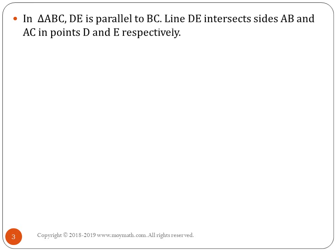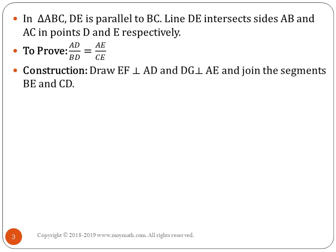In triangle ABC, DE is parallel to BC. Line DE intersects AB and AC at points D and E respectively. We have to prove that AD/BD = AE/CE. For construction, we draw EF perpendicular to AD and DG perpendicular to AE, and join segments BE and CD.